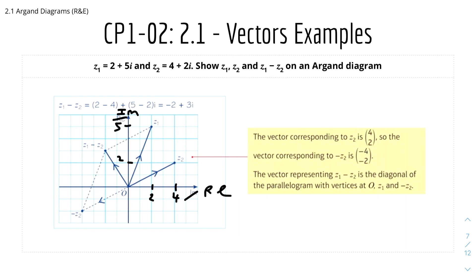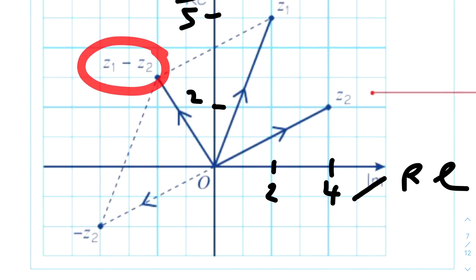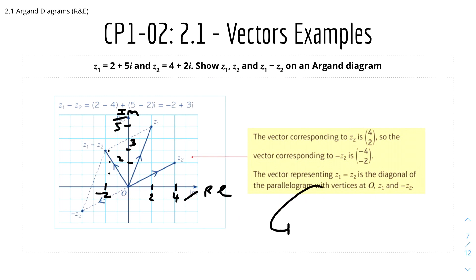The resultant vector equals z1 minus z2, which is equal to this line here, which we can calculate by counting the squares. This would be minus 2 and this is 3. Therefore we know that z1 minus z2 will be equal to minus 2 plus 3i, and that's the final answer.